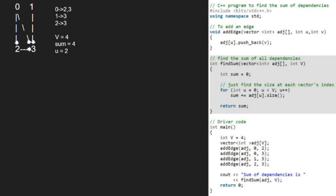Then u becomes 3. Since adjacency list of 3's size is 0, sum remains 4 and we come out of the for loop and return 4.